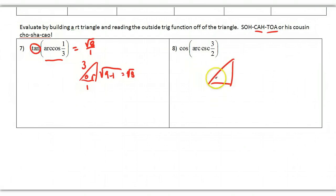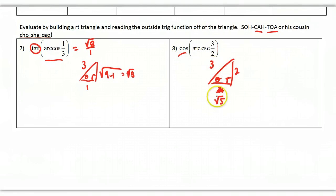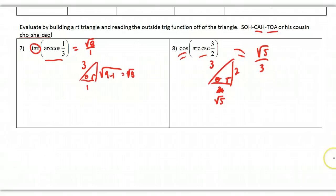Build the triangle with the insider information and read it off with the outside information. For the cosecant example: cosecant is hypotenuse over opposite. The missing piece is square root of 9 minus 4, which is square root of 5. Now I read off the cosine: adjacent over hypotenuse, which is square root of 5 over 3. So that answer is square root of 5 over 3. Build it, read it.